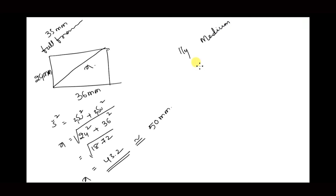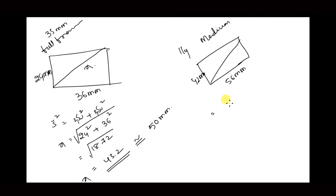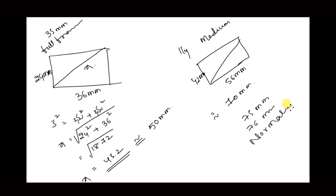This is similar for the medium format camera — the normal lens is approximately 75mm to 76mm. So if you know this calculation, you can determine the normal lens, telephoto lens, and wide-angle lens for any sensor size, including a cell phone. It will be easy.